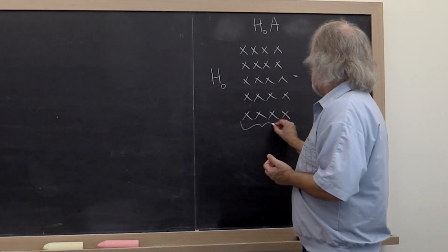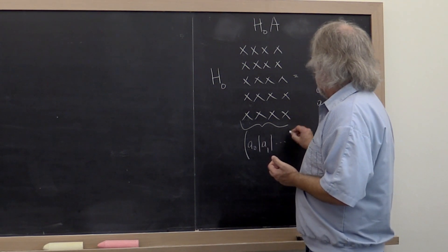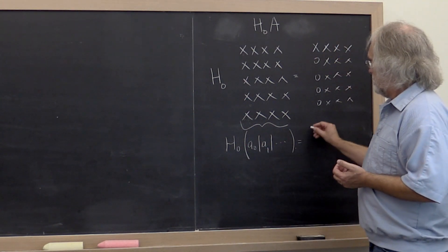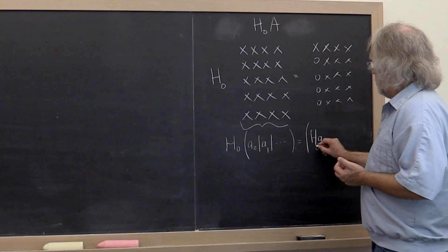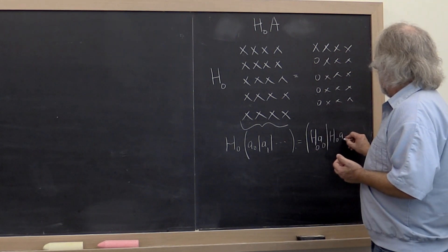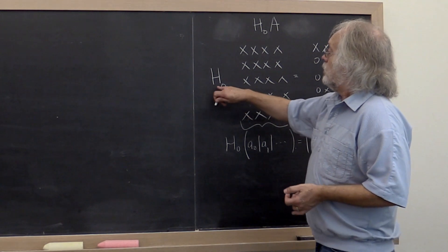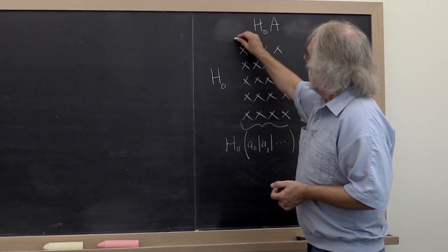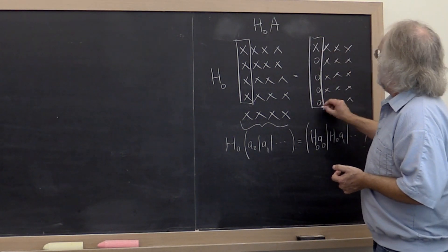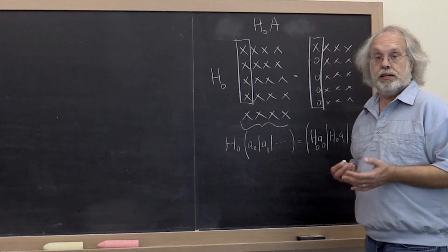If we view this matrix by its columns — A0, A1, and so forth — then applying H0 to that matrix leaves us with a matrix where the first column is replaced by H0 times A0, the second column is replaced by H0 times A1, and so forth. So what we're really saying is we want a Householder transform such that this first column is transformed into a scalar multiple of the first standard basis vector.